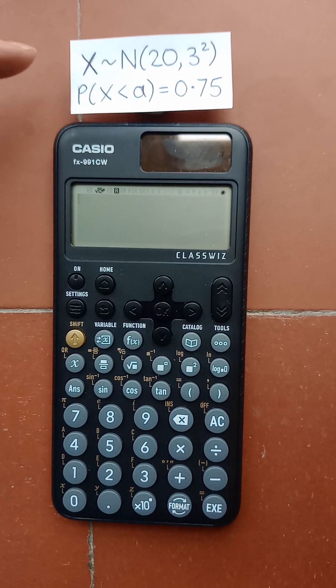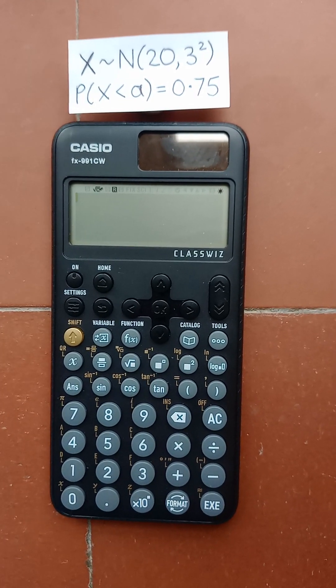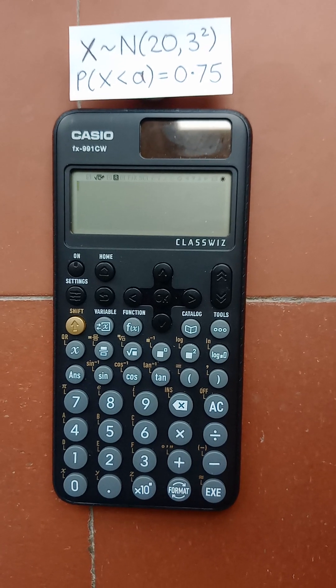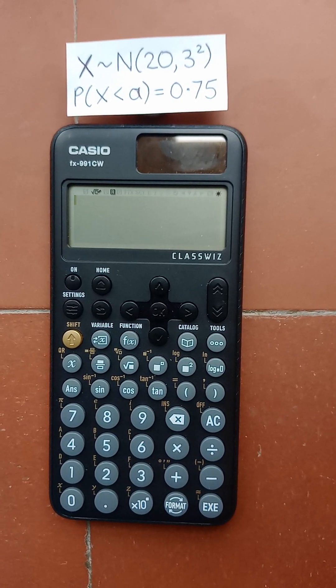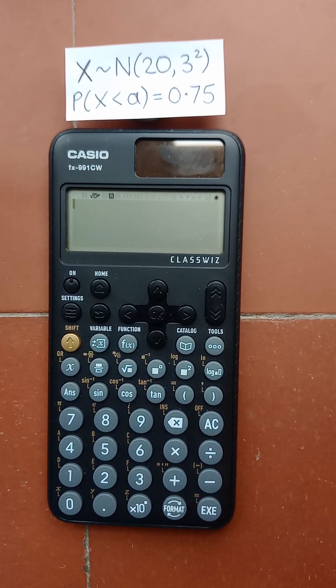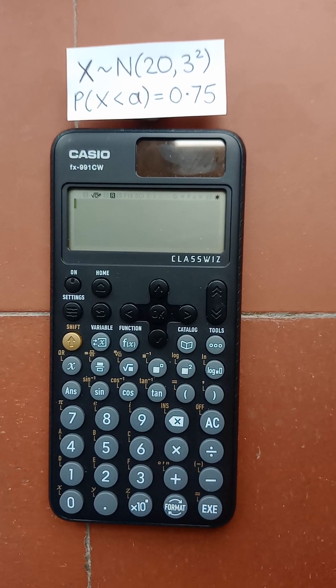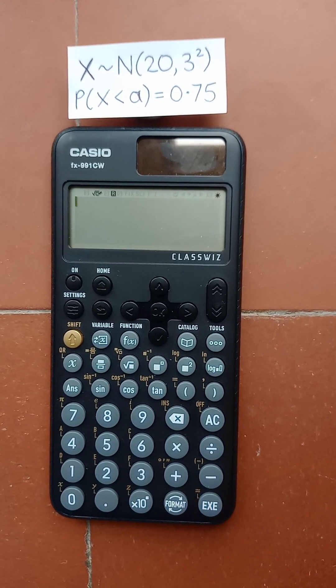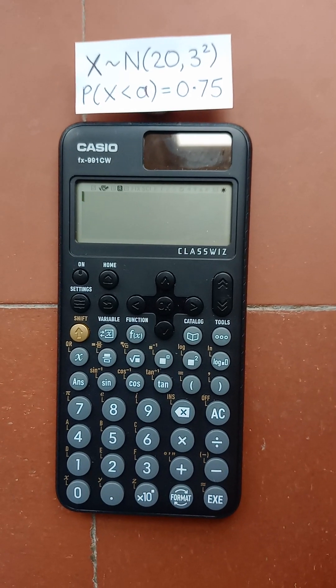Hello. If you have a normal distribution where 20 is the mean and 3 is the standard deviation, you can find out what A is in the case of this probability by using the inverse normal function on your calculator. And here's how.